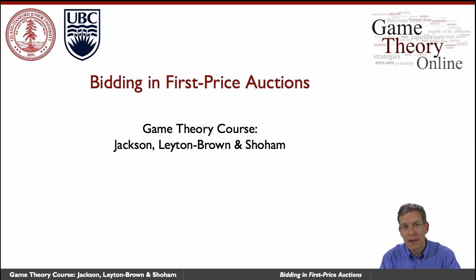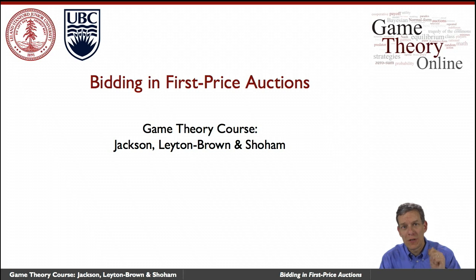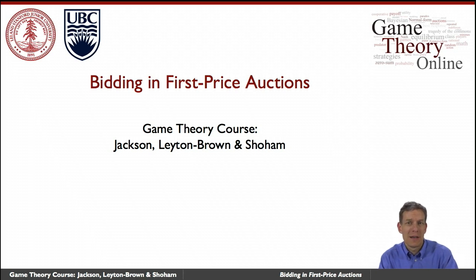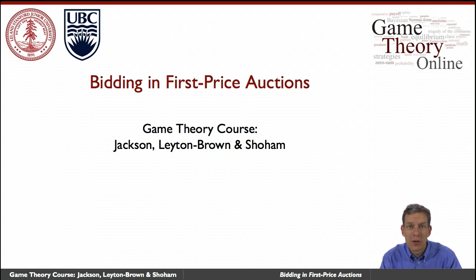In first price auctions, you're actually paying what you bid. So if your bid equals your valuation and you win, you end up with no surplus because you're paying exactly what you think the item's worth — you get nothing out of it. So here you're going to have an incentive to shade your bid.